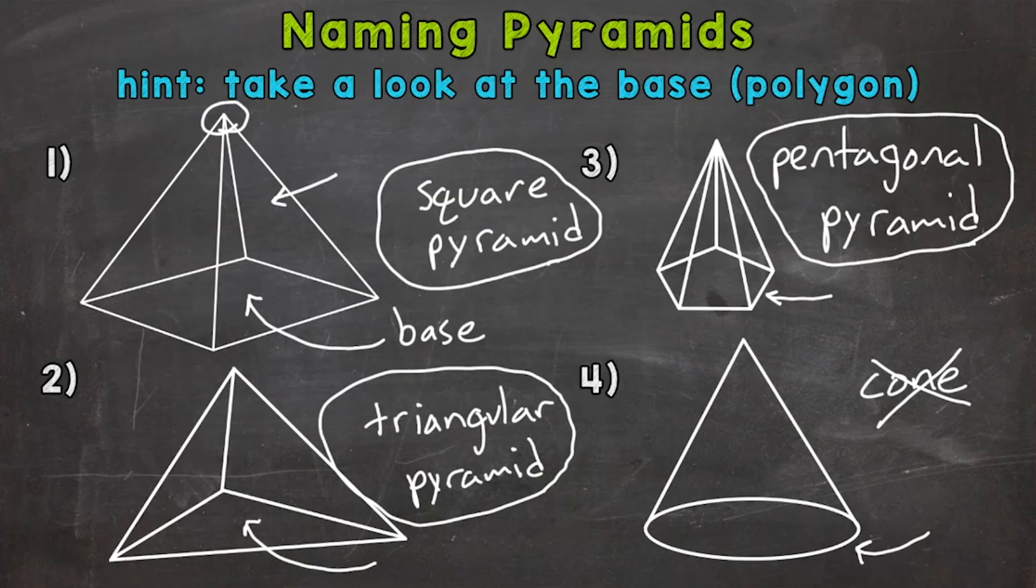no curves. And that oval does not fit that description, so it's not a polygon and therefore not a pyramid.